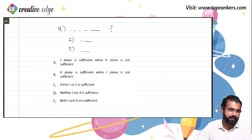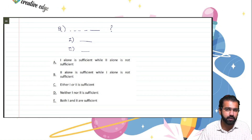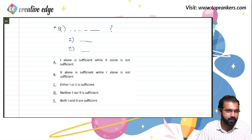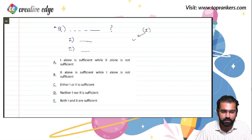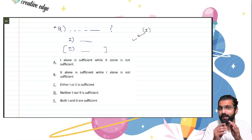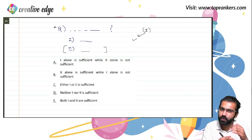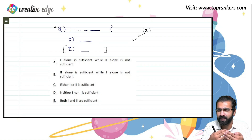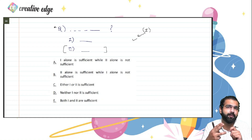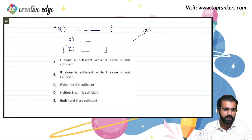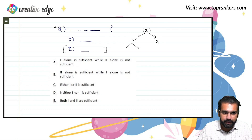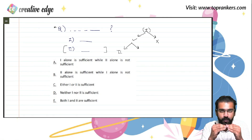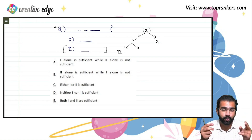The approach is: whatever question you are given, first try to solve it with the help of statement 1 alone. You are not looking at statement 2 as of now. If you are able to figure out the answer using statement 1 alone, there are two possibilities. If statement 1 alone was sufficient, you then move towards checking whether the answer can be figured out with statement 2 alone or not.